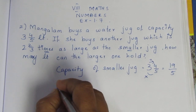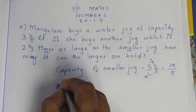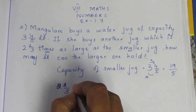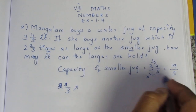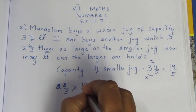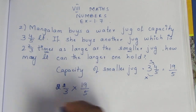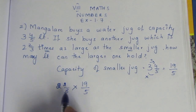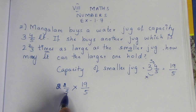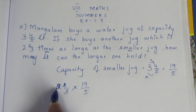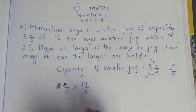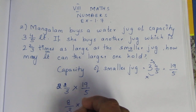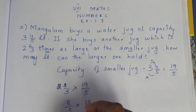2 and 2/3 times of the smaller jug, which is 19 by 5, gives us the larger capacity. We convert 2 and 2/3 to an improper fraction: 2 twos are 4, plus 2 is 6, plus 2 is 8, so 8 by 3. Now multiply: 8 by 3 into 19 by 5.